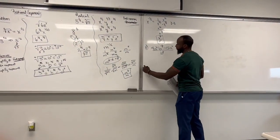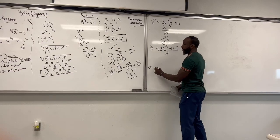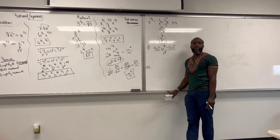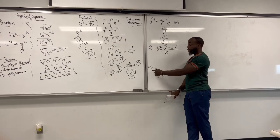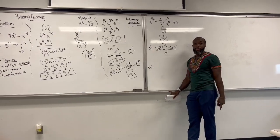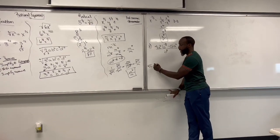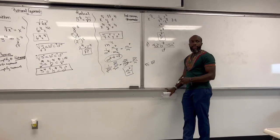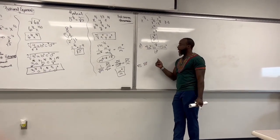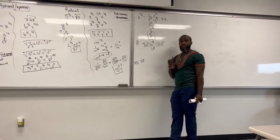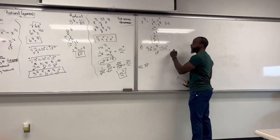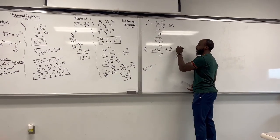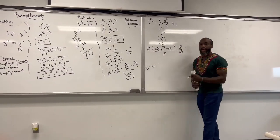So looking at it like this, if this was the cube root of b, what would you have to do to get that radical to change? How many more b's do you need? You need 3 b's. That's 1 b right there, so we need 2 more b's. That would be b squared, right? So how would you write b squared as a fraction? 2 over 3. So we got b to the 2/3 here and b to the 2/3 there.